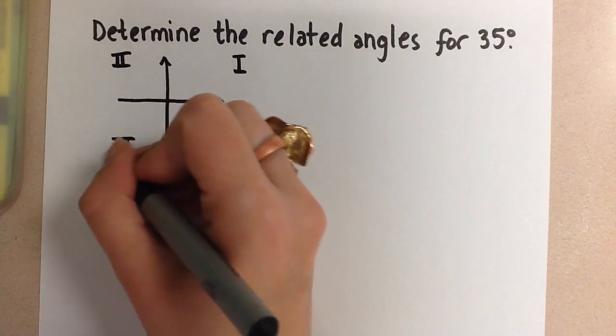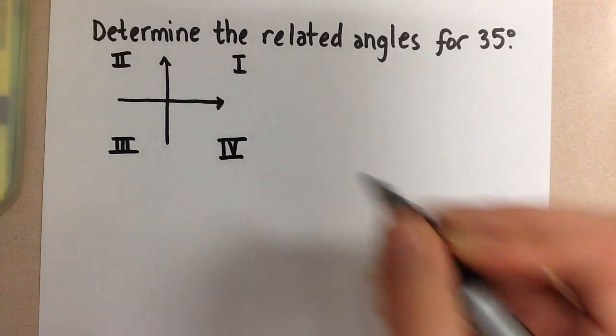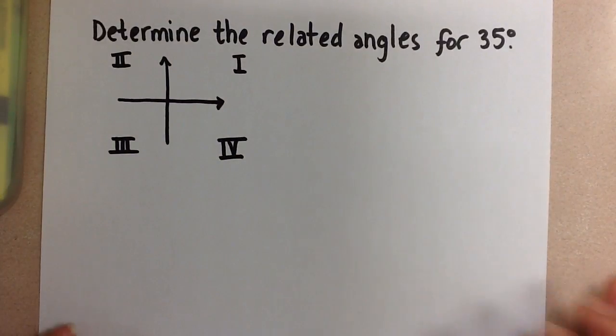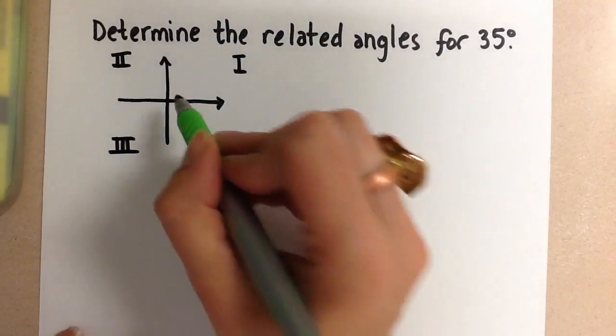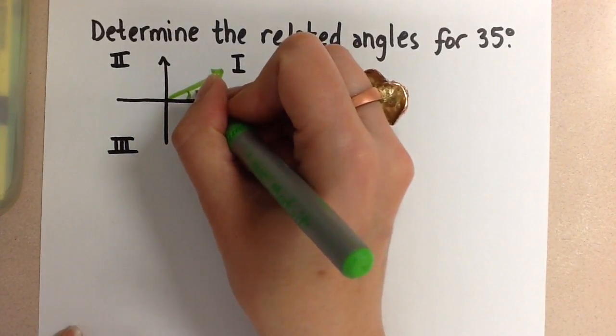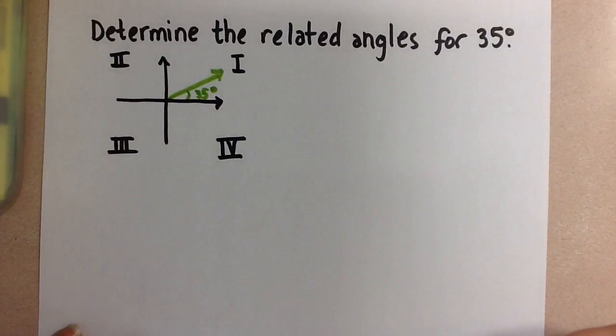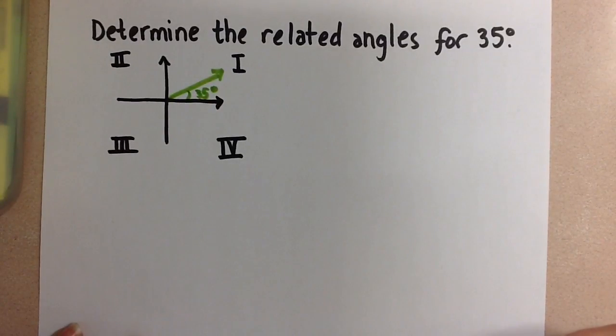So we're going to do this by drawing a quick diagram. You don't have to if you feel comfortable with it, but that's what we're going to do today. So the angle 35 degrees is in the first quadrant about here, and it makes an acute angle.